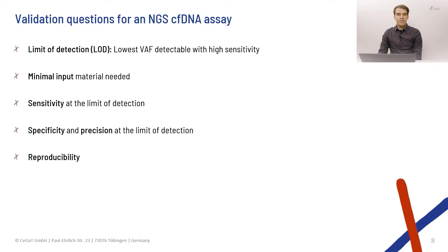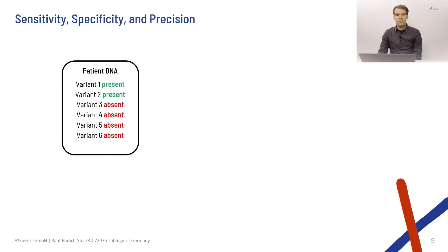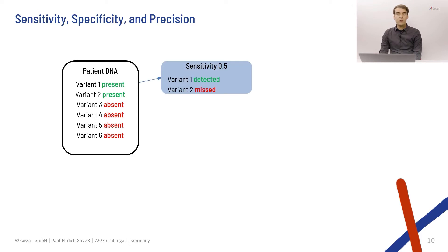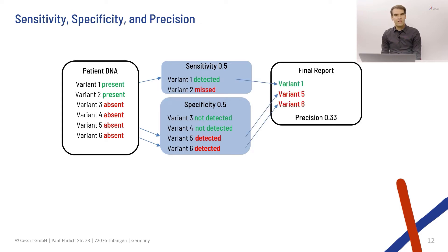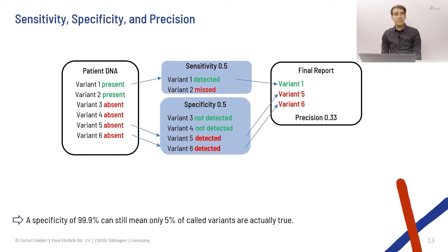Before going into details, let's look at the words sensitivity, specificity, and precision, because these are very important. Consider an assay that looks for six different variants in a patient who has two variants present. If our test detects one of those two variants, sensitivity is 0.5. If it also falsely detects two variants not in the patient, specificity is 0.5. But what matters is what we report to the patient — in this case, two of three reported variants are wrong, so precision is 0.33. When you see very high specificity figures for tests, always consider that this does not necessarily mean the final report is very precise.